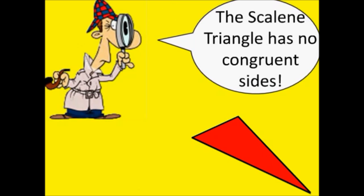Scalene triangle, triangle, triangle. Scalene triangle, no congruent sides. This is a right triangle, triangle, triangle. This is a right triangle, a right angle in it.